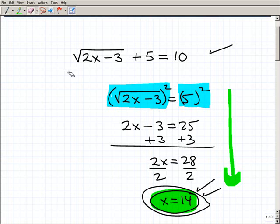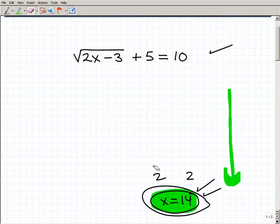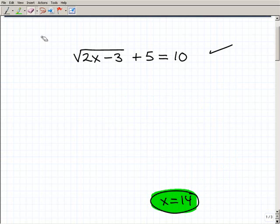So real quick, let's go ahead and actually do this. I'm going to go ahead and erase all this. So x equals 14 looks like our solution. So let's go ahead and plug it in to our original statement here. So that would be 2, x is 14 right here, right? Minus 3 plus 5 equals 10.